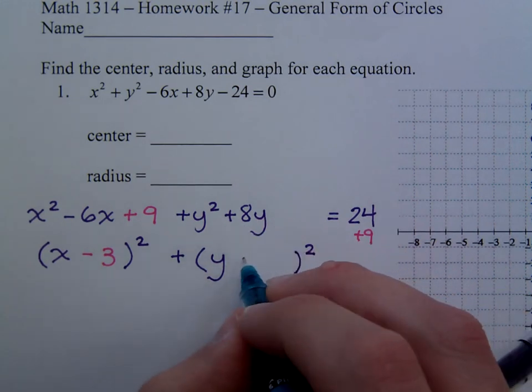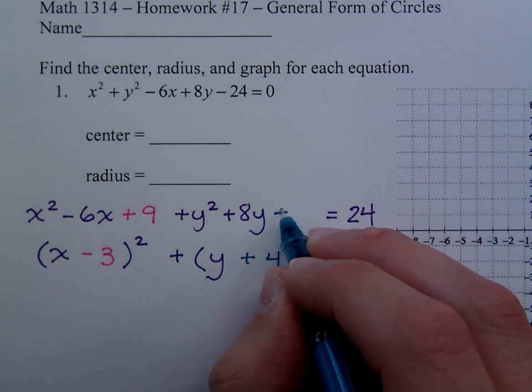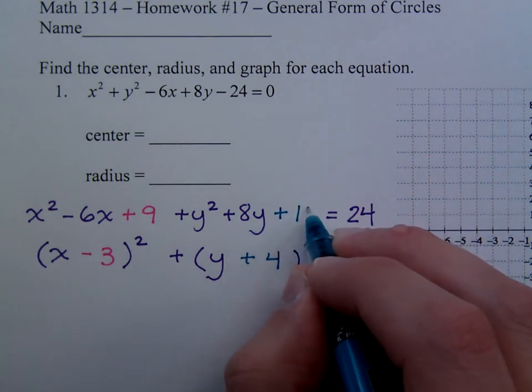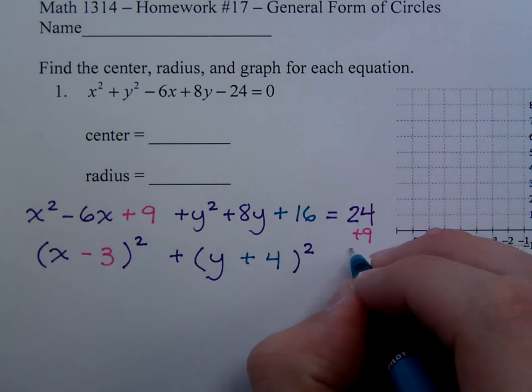And then here, what's half of 8? Positive 4. And positive 4 squared is 16. So we have to add 16 over here.